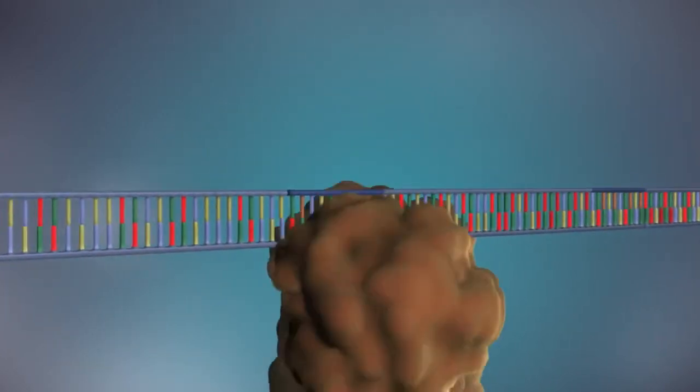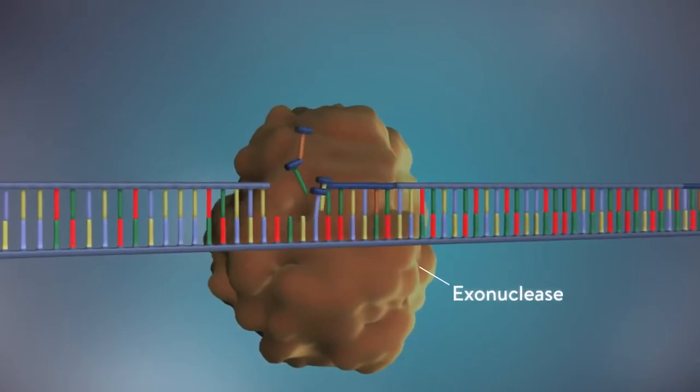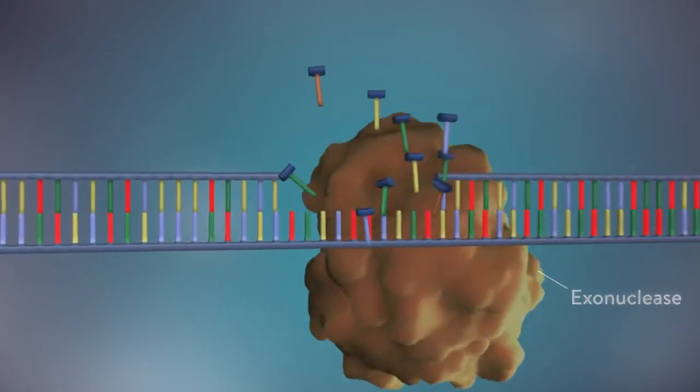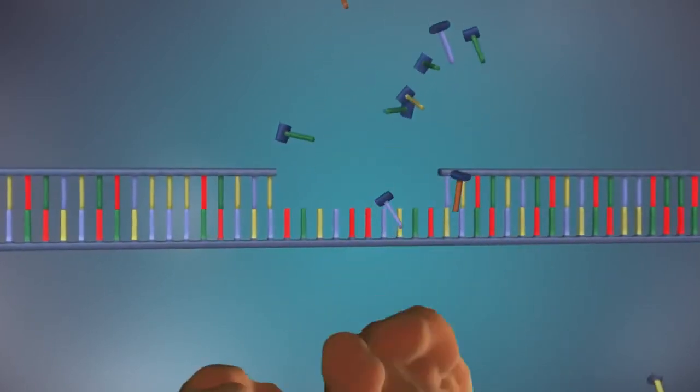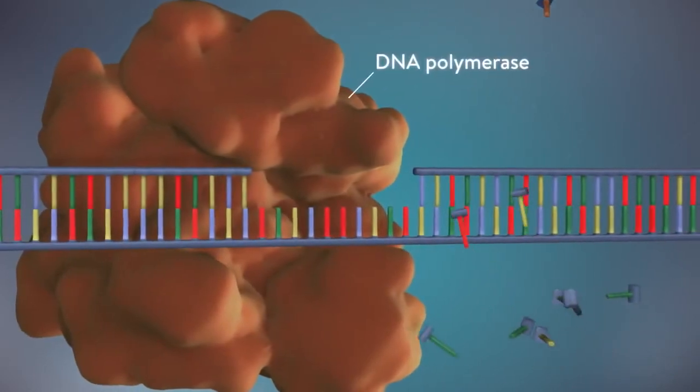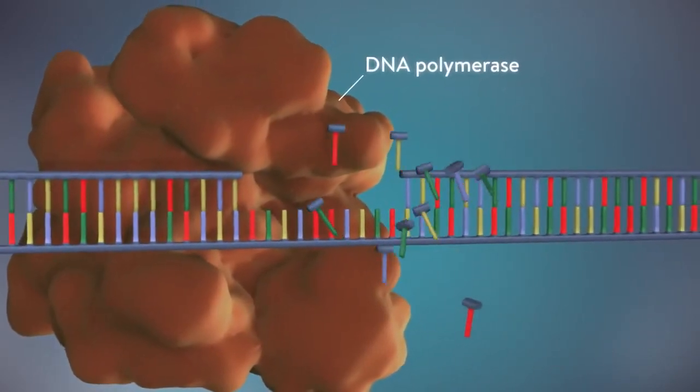Once the new DNA has been made, the enzyme exonuclease removes all the RNA primers from both strands of DNA. Another DNA polymerase enzyme then fills in the gaps that are left behind with DNA.